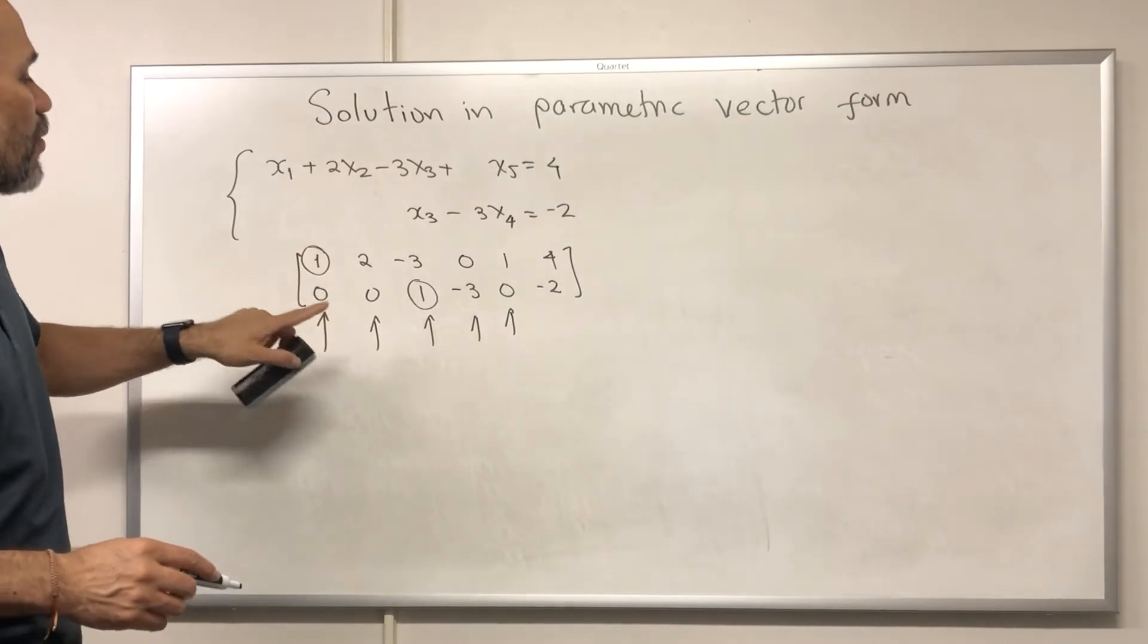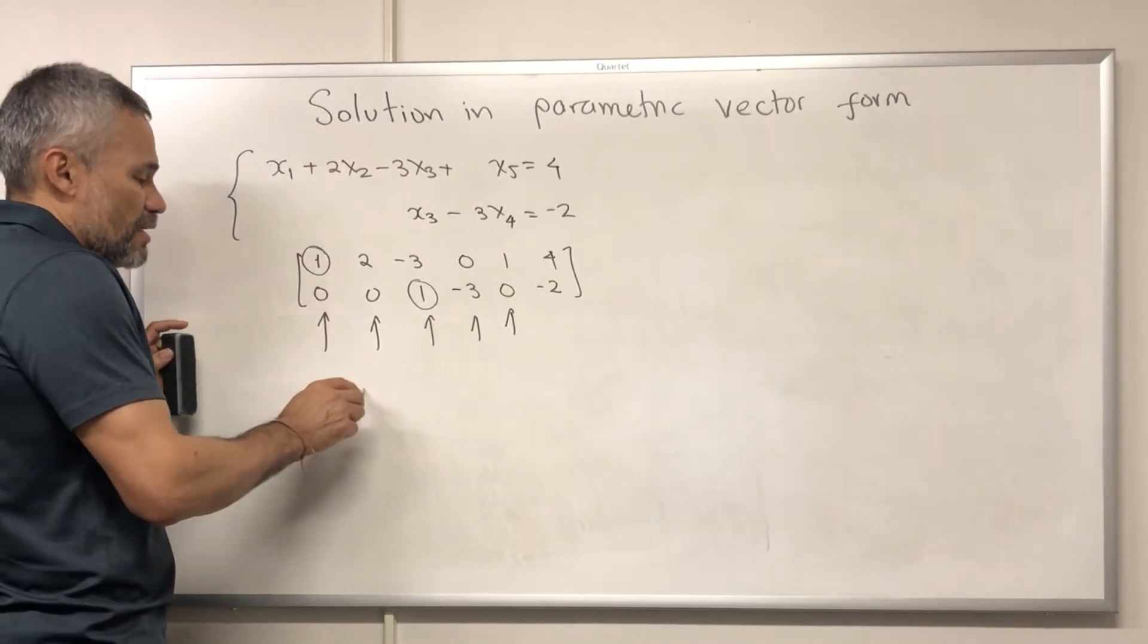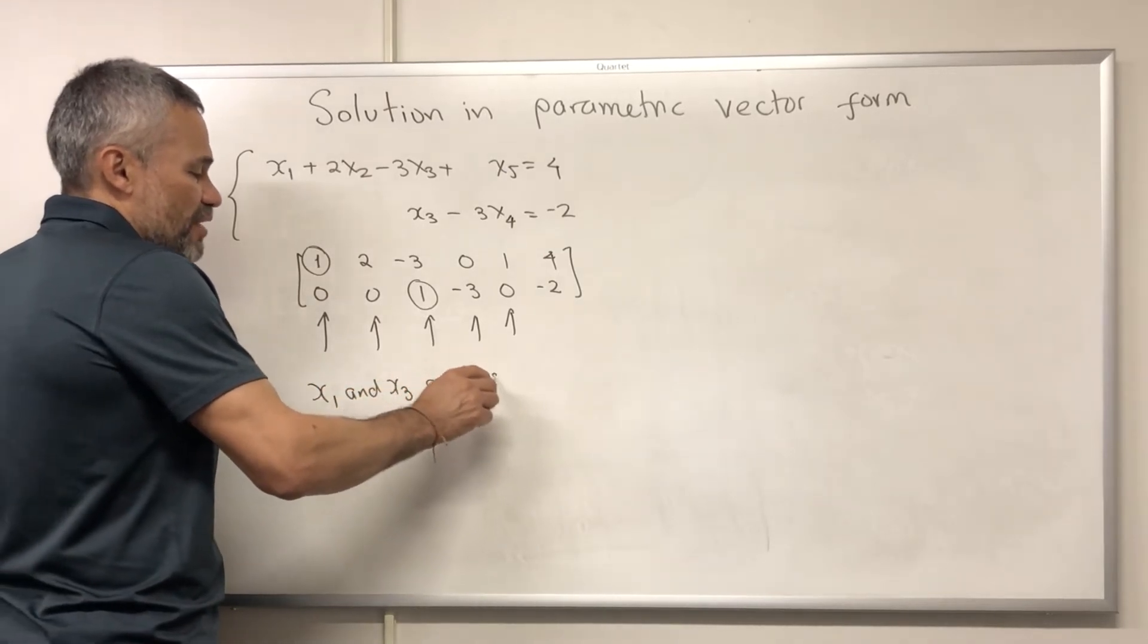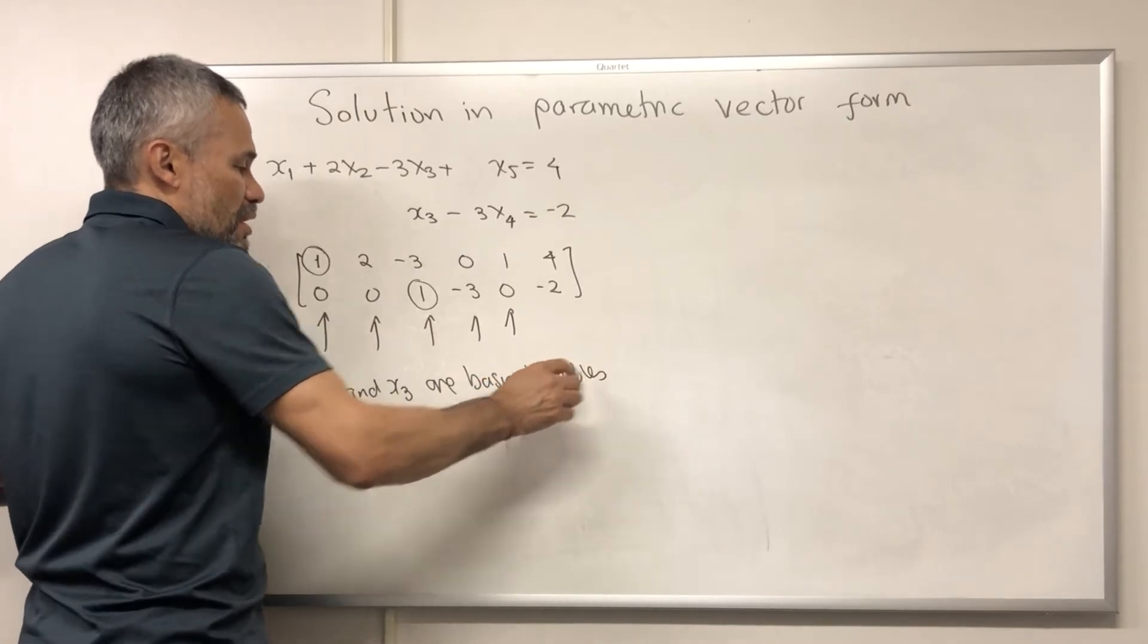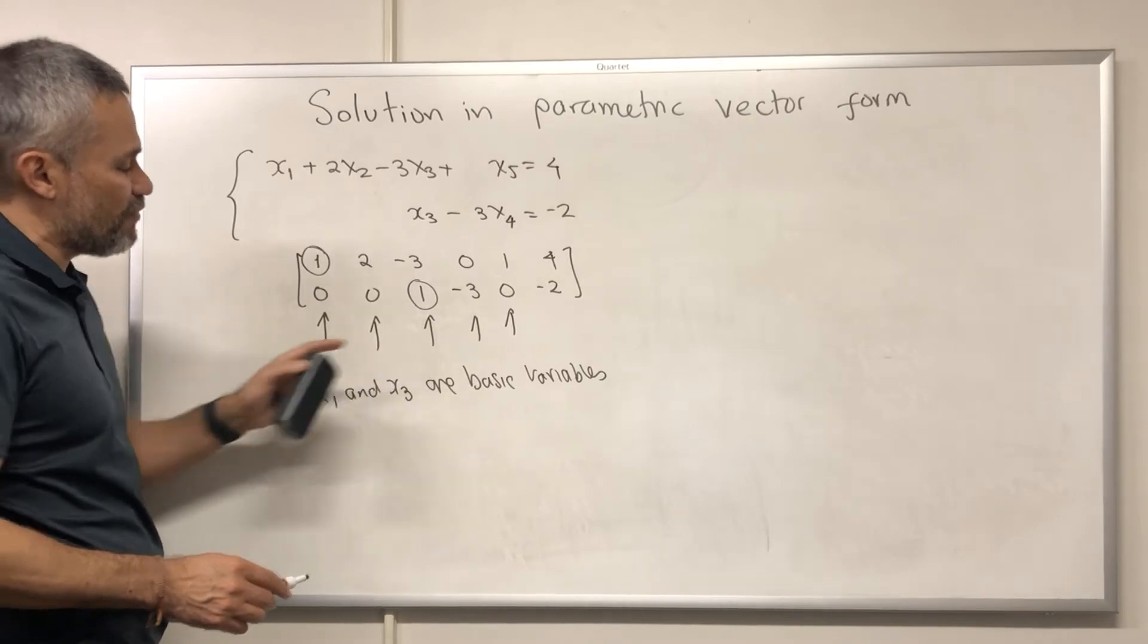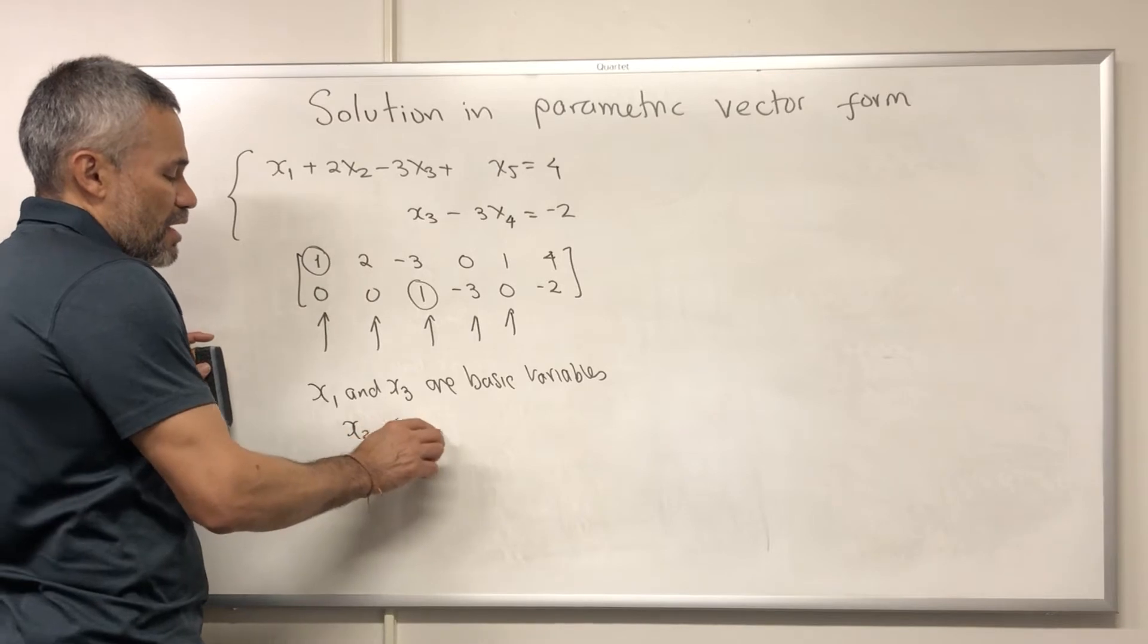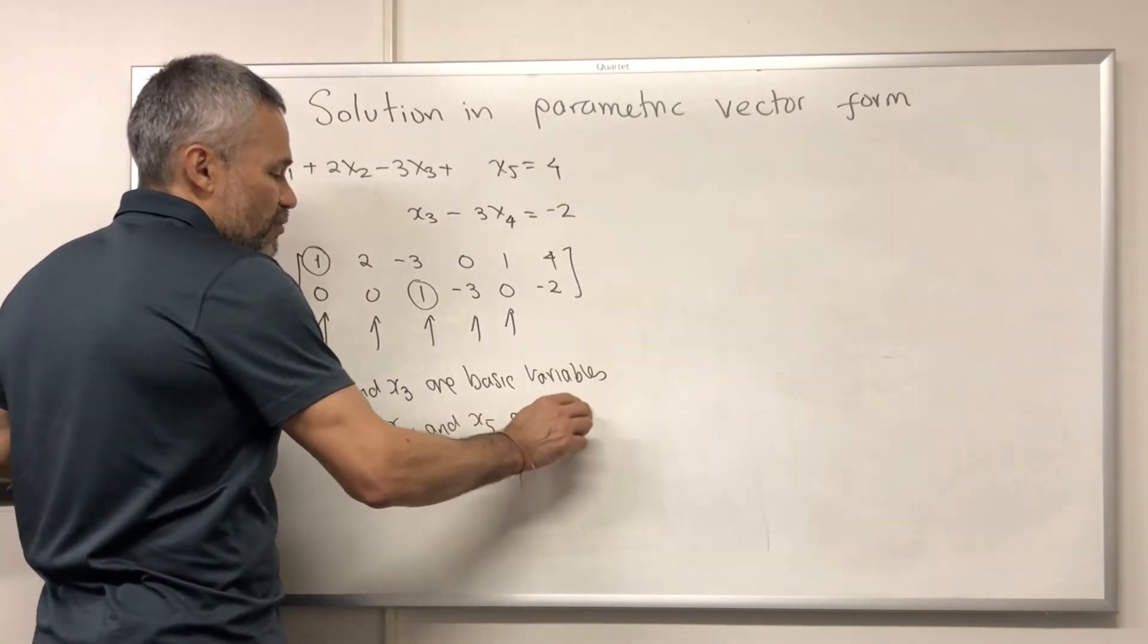And then we label the variables. We say that x1 and x3 are basic variables because they are variables that correspond with columns with pivots. And x2, x4, and x5 are free variables.